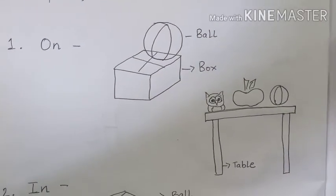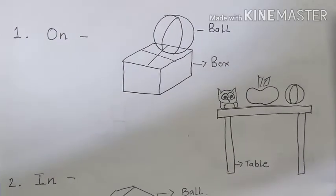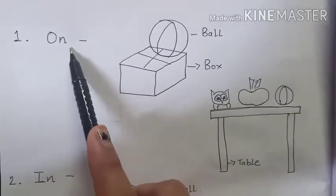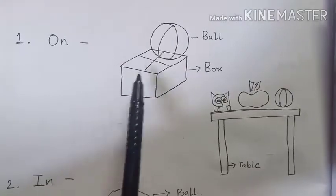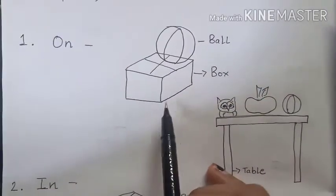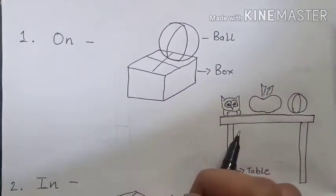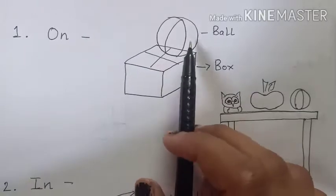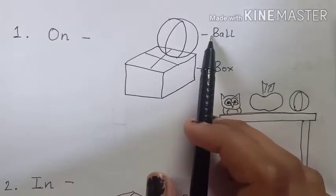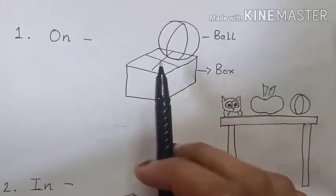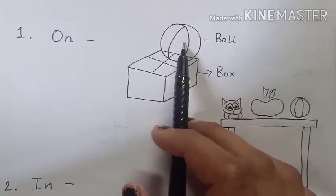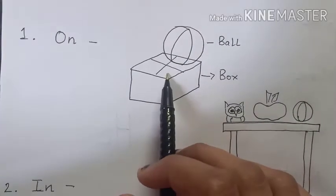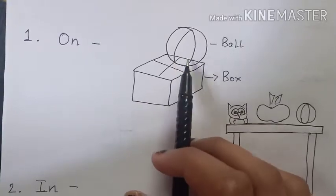Number 1: 'on'. Students, as you can see, I have written the word 'on'. On ka matlab hai oopar — 'on' means above. I have given two examples here. What is this? This is a box. This is a ball. The ball is on the box. Yeh ball box ke oopar hai.